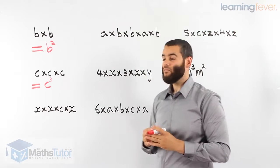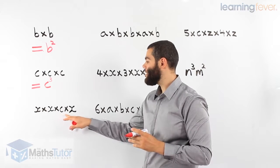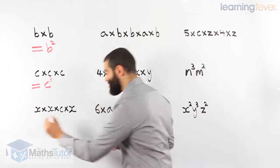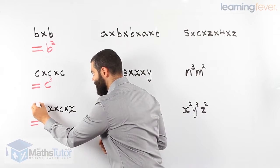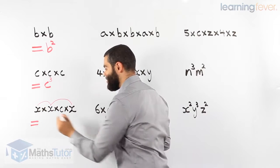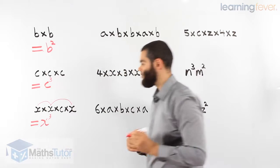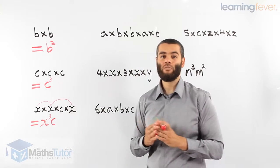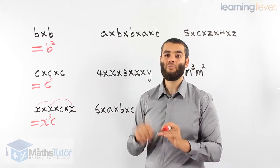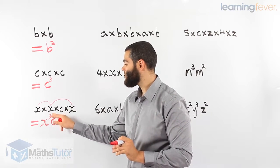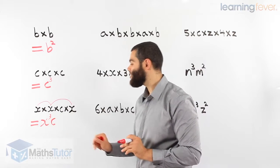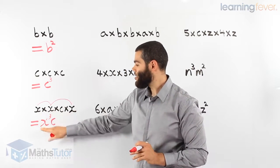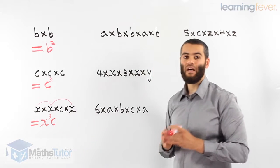Next one here: x times x times c times x. We have 2 different pronumerals — we have the x's and the c. Let's start with the x's first. x times x times x — there are 3 of them multiplied together, which means x cubed, and times c, and we just write c. We don't write the multiplication. In algebra, we always like to make things shorter. Multiplication is not written but we know it's there. So x cubed c — meaning x cubed times c. That's the short form, the index notation for writing that.